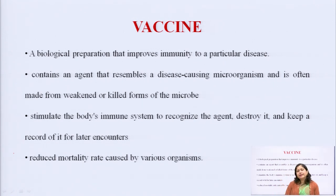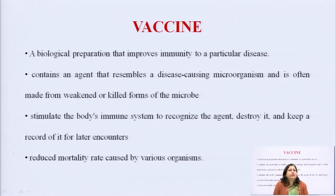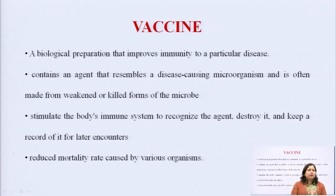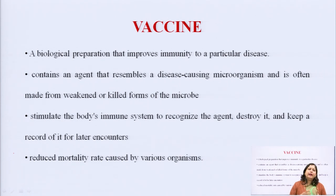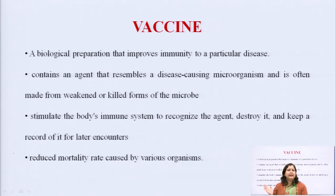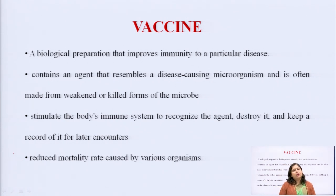Basically, a vaccine is a biological preparation that improves the immunity for a particular disease. It contains an agent which is a disease-causing microorganism and is often made from the weakened or killed forms of the microbe. Either the covering of the particular virus or bacteria is taken, or certain surface proteins of that bacteria are taken, or the dead microorganism itself is taken, so that it retains certain properties which can be used as an identifying character for our body's immunity. It stimulates the body's immune system to recognize the agent, destroy it, and keep it in record for a later encounter.